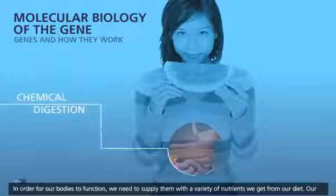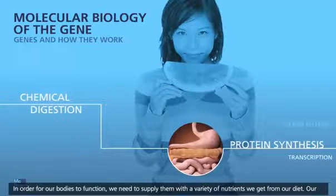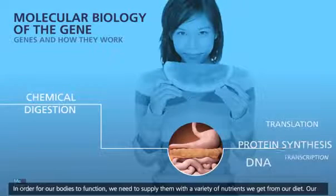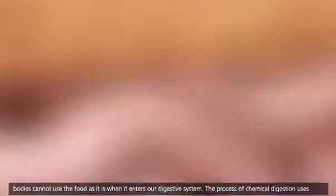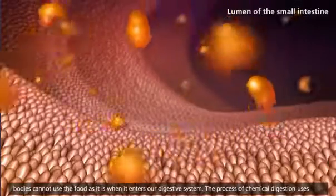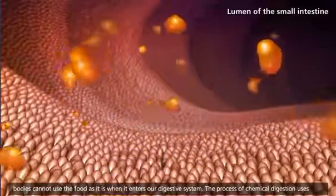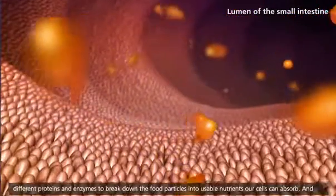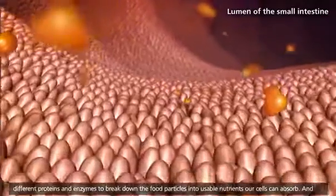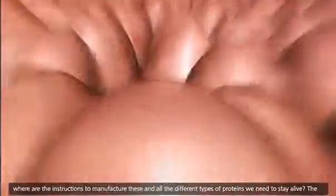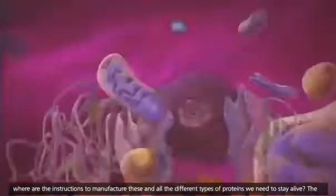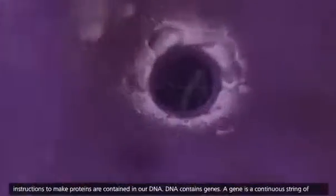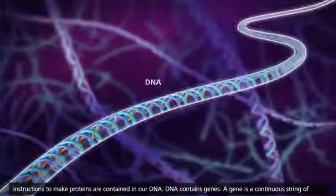In order for our bodies to function, we need to supply them with a variety of nutrients we get from our diet. Our bodies cannot use the food as it is when it enters our digestive system. The process of chemical digestion uses different proteins and enzymes to break down the food particles into usable nutrients our cells can absorb. And where are the instructions to manufacture these and all the different types of proteins we need to stay alive? The instructions to make proteins are contained in our DNA.